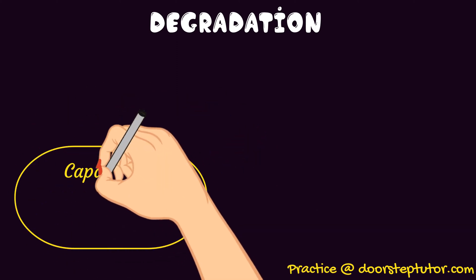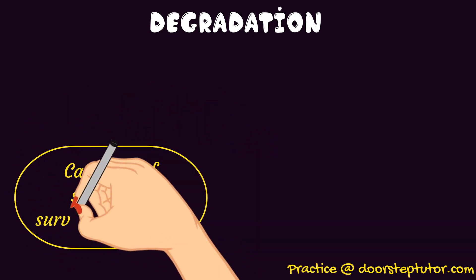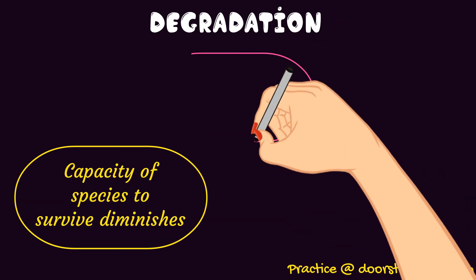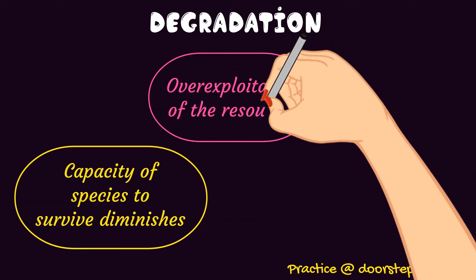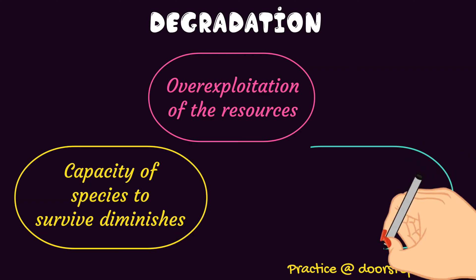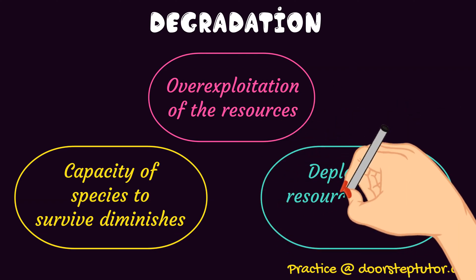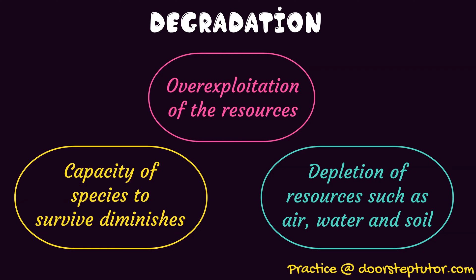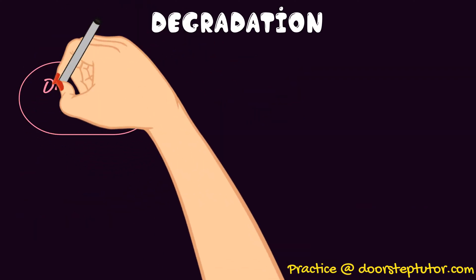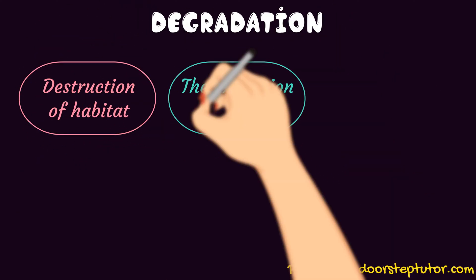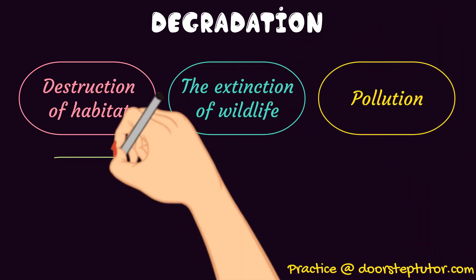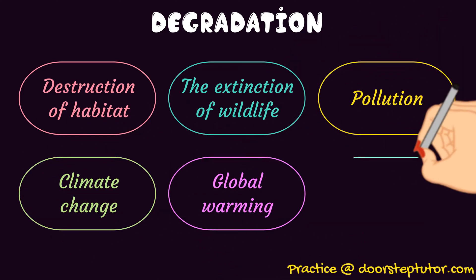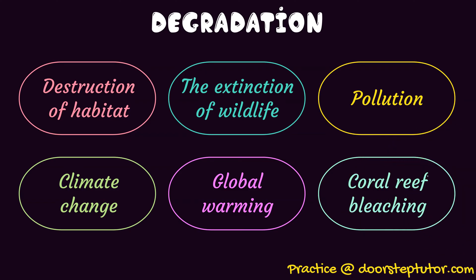What is degradation? Degradation is when the capacity of species to survive is diminished, when there is over-exploitation of resources, when there is a depletion of natural resources like air, water and soil, when there is destruction of habitat, extinction of wildlife, pollution, climate change, global warming, coral reef bleaching, and many more.